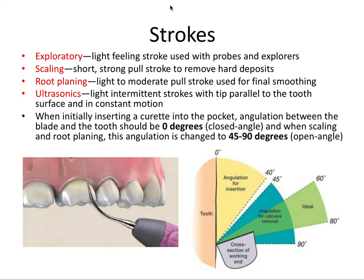When using both hand instruments and ultrasonics, there are different strokes used as operators. This is definitely an important topic for the board exam because most of the periodontal questions will be on therapy. An exploratory stroke is a light feeling stroke used with probes and explorers — not for scaling or root planing, but for using a probe to measure pocket depth, clinical attachment loss, or an explorer to detect if calculus is present.